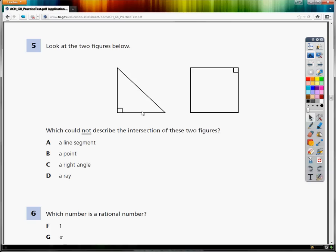which could not describe the intersection of these two figures? All you have to do for this question is think logically about what the types of things that these are, the components of these shapes, and then what they could possibly be. They want to know, if I put them together, what could I say about how they intersect?